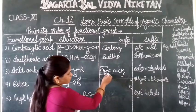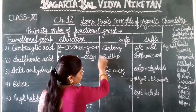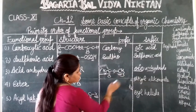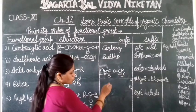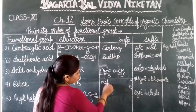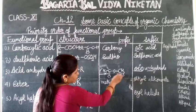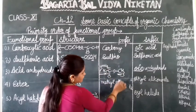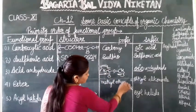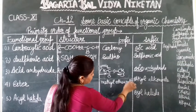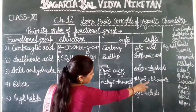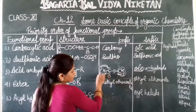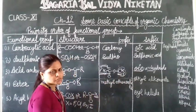Now let's take an ester example. I mentioned that the R attached to oxygen — if there is one carbon, it is methyl, and the main chain has two carbons, so the name becomes 'methyl ethanoate'. So alkyl alkanoate — in this case methyl ethanoate is the name.